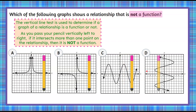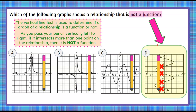So it looks like it's going to be choice D. And we can see as we put our pencil on it, the pencil is going to pass through four points at the same time. So it fails the vertical line test, and the graph that is not a function is going to be choice D.